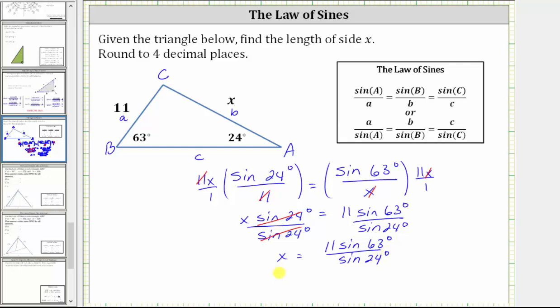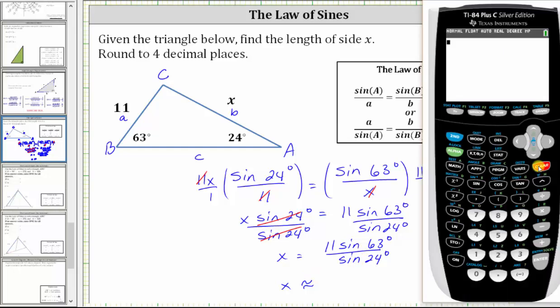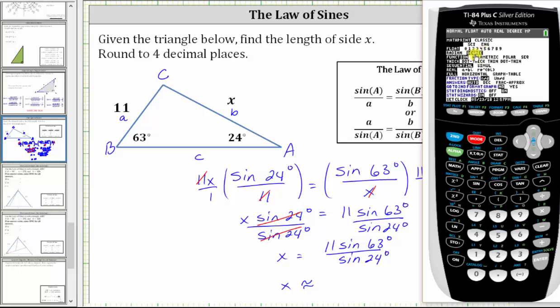And now we will go to the calculator to round this value to four decimal places. It's important to make sure the calculator is in degree mode. Let's press the mode key. Notice how here degree is highlighted. If degree was not highlighted, we would use the arrows to go down to degree and then press enter. And now we go back to the home screen by pressing second mode for quit.